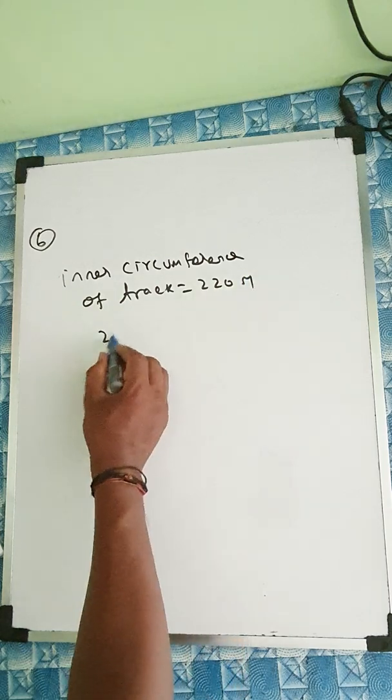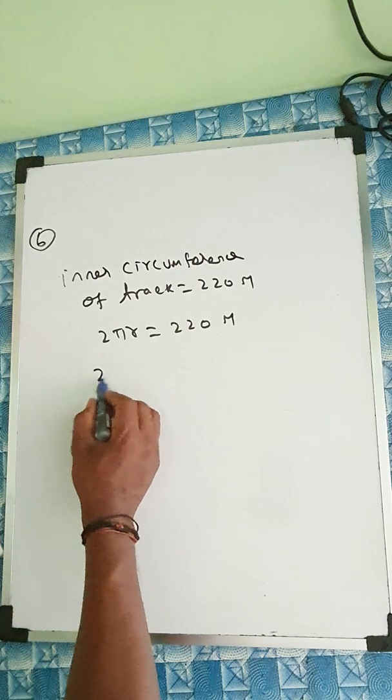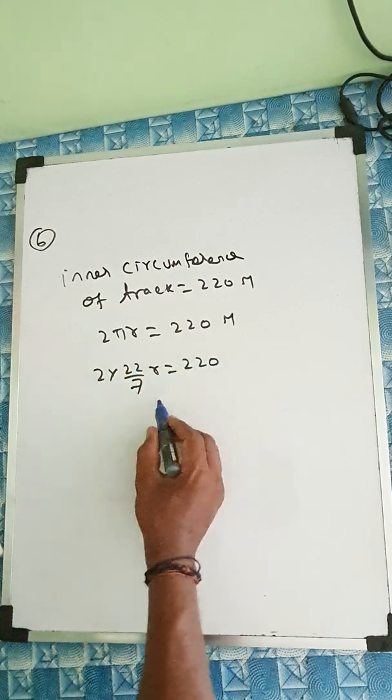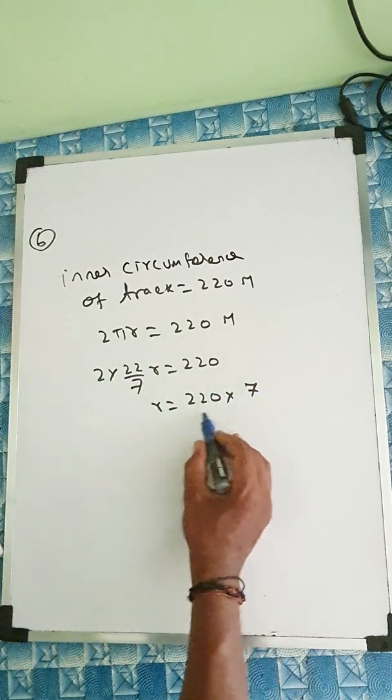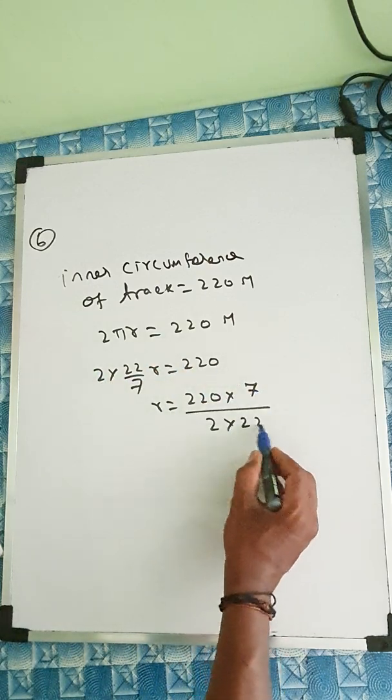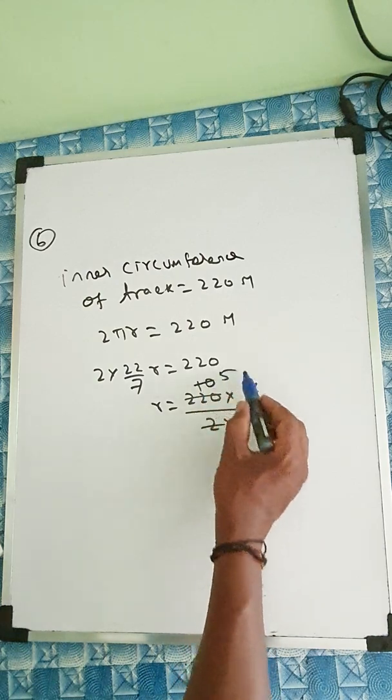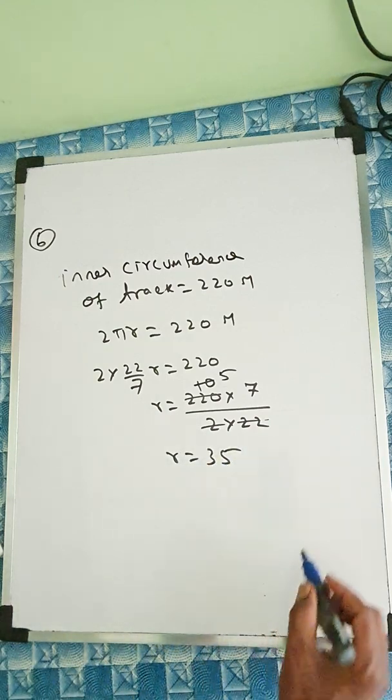That means formula 2πr equal to 220 meter. 2 into 22 by 7 into r equal to 220. So r equal to 220 into 7 by 2 into 22. We will cancel. Then again 2, 5, 0. 7, 5, 0, 35. The inner track is 35.